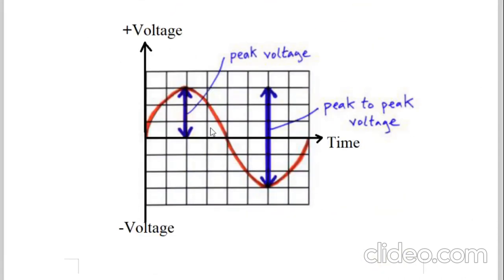Here is another example: a red sine wave with time on x-axis and voltage on y-axis. Above the x-axis is positive voltage and below is negative voltage. The sine wave goes in positive half cycle and in negative half cycle. The distance between the x-axis and Vp is the peak voltage. The distance between positive peak and negative peak is called peak-to-peak voltage. This is important because in amplitude modulation, peak voltage will be required.